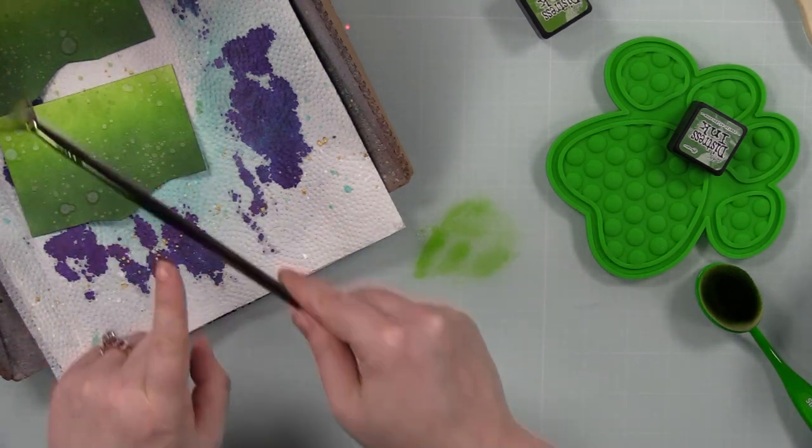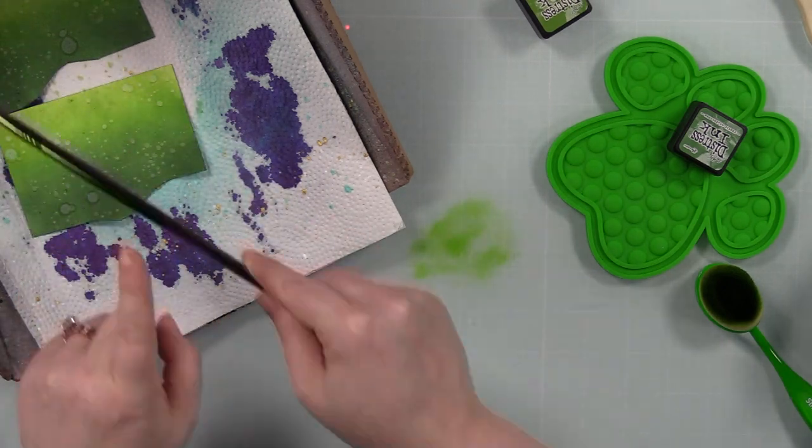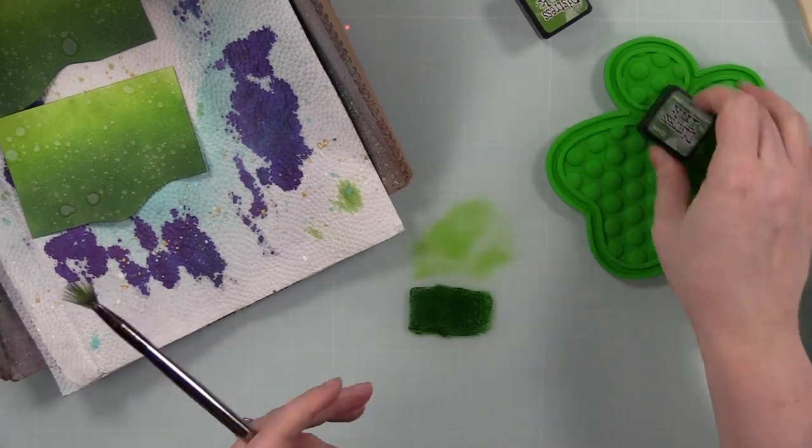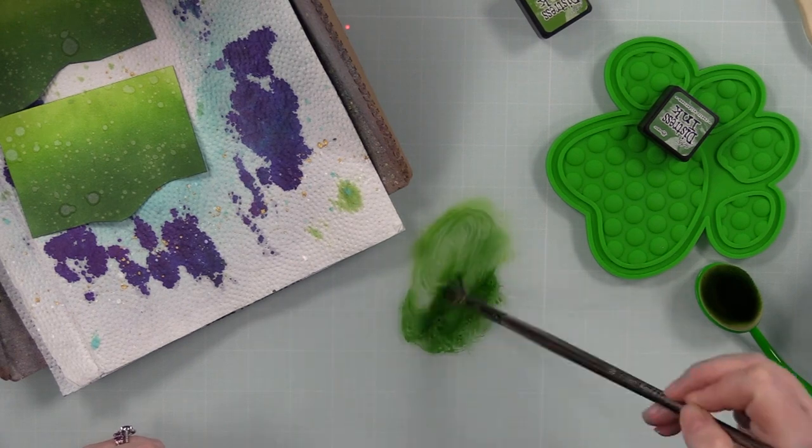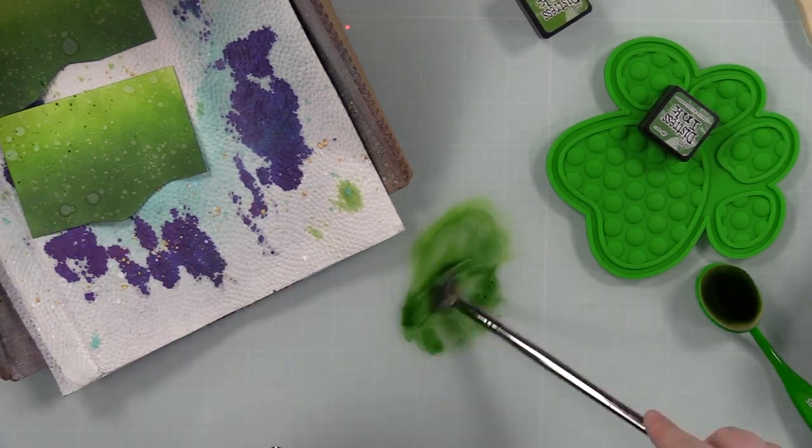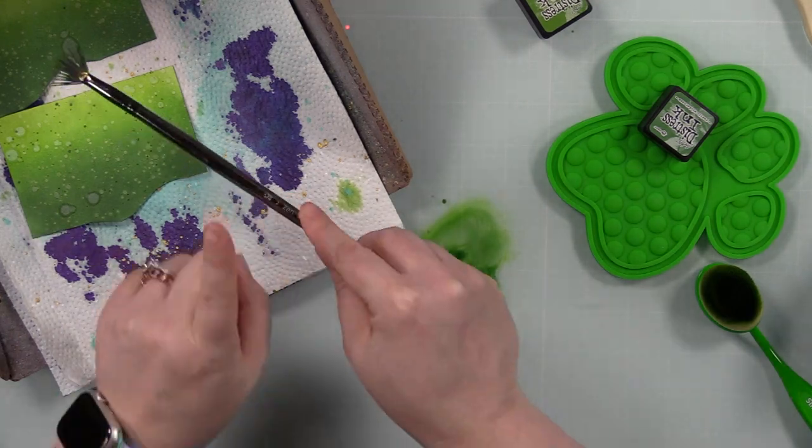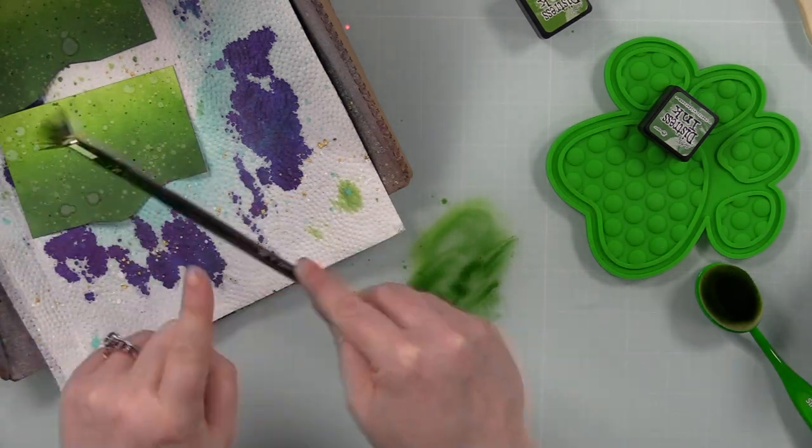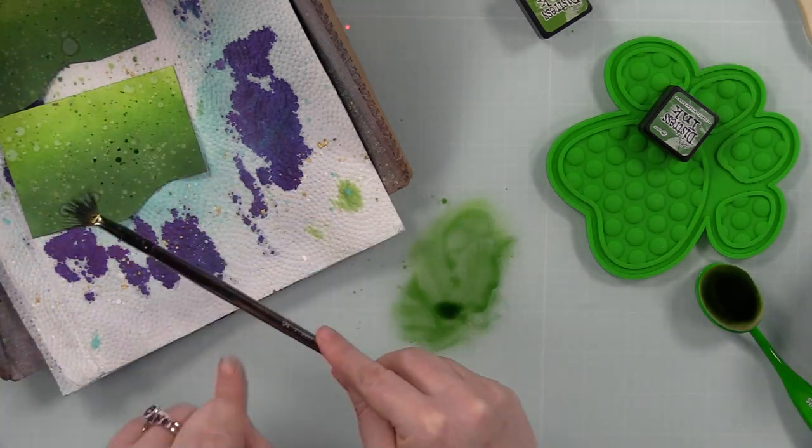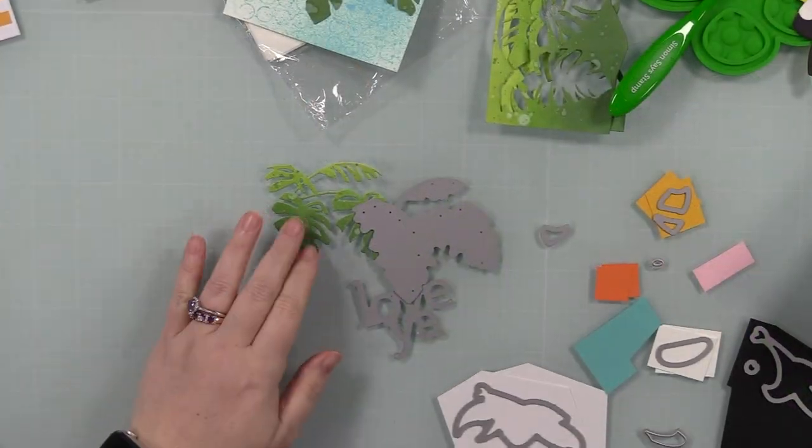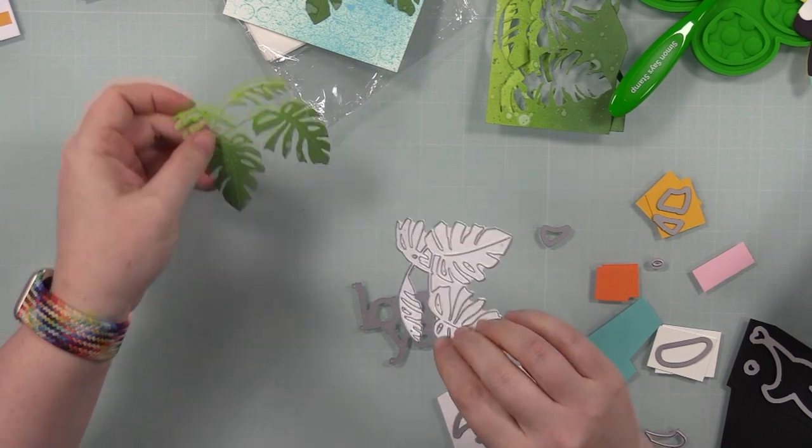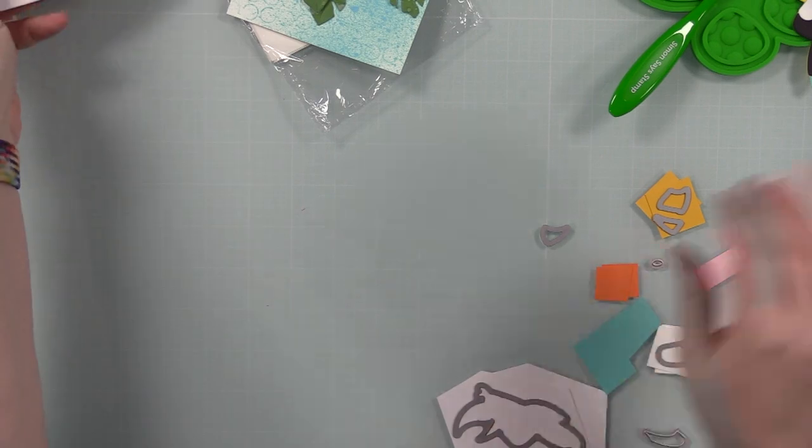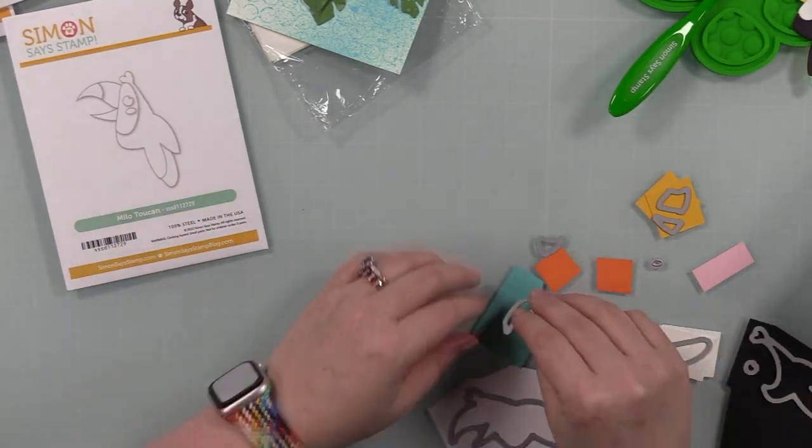I used my fan brush to splatter the water first to get all those different sizes of blotches. Then I wanted to add even more, so I used Mowed Lawn, smushed that on my work surface and added a little bit of water. This time I'm using my splat box so I'm not getting green splatter everywhere. I had so much fun making this—I have fun making every card.